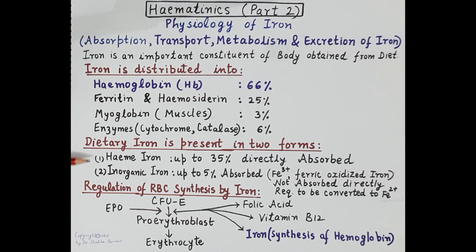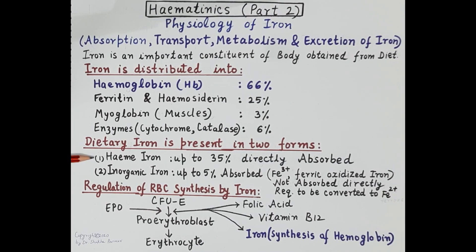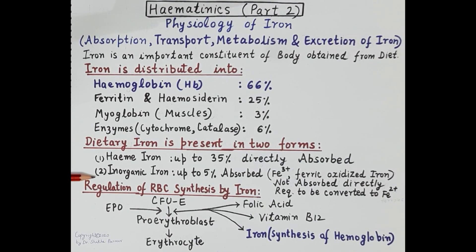Heme iron is much better absorbed compared to inorganic iron. Up to 35 percent of heme iron is absorbed directly in the intestinal mucosal cells without the use of a transporter. Importantly, heme iron contains iron in the ferrous form — that is, Fe2+ form. Inorganic iron is absorbed less — only five percent of inorganic iron is absorbed.